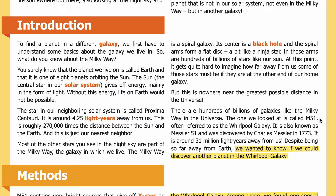The galaxy we looked at is called M51, often referred to as the Whirlpool Galaxy — also known as Messier 51, discovered by Charles Messier in 1773. It is around 31 million light years away from us. Despite being so far away from Earth, we wanted to know if we could discover another planet in the Whirlpool Galaxy.